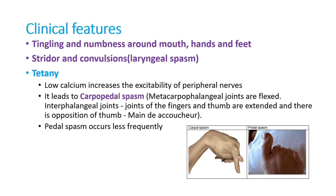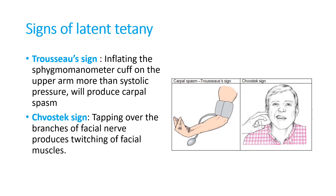Upper limb spasm produces carpal spasm; lower limb spasm produces pedal spasm — together called carpopedal spasm. The upper limb shows extension of finger joints and thumb with opposition of the thumb. Trousseau's sign: inflating a BP cuff above systolic pressure on the upper arm reproduces carpal spasm. Chvostek's sign: tapping over branches of the facial nerve produces twitching of facial muscles. These are clinical examination findings that should be confirmed with lab investigation.